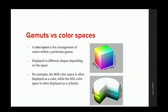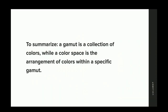To contrast that, the color space is the arrangement of the colors within the gamut, displayed in different shapes depending on the space. The RGB color space is usually represented as a cube with red, green, and blue on the sides. HSL is usually displayed as a cylinder with saturation coming from the radius out, lightness coming from top to bottom, and hue as the color wheel's circumference going from 0 to 360. To summarize: the gamut is a collection of colors, and the color space is the arrangement of colors within the gamut.